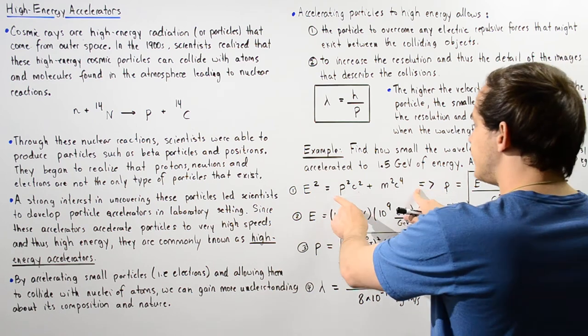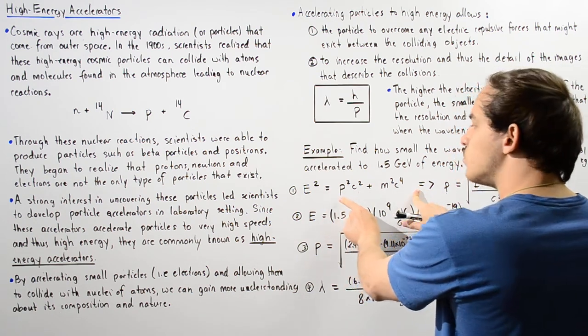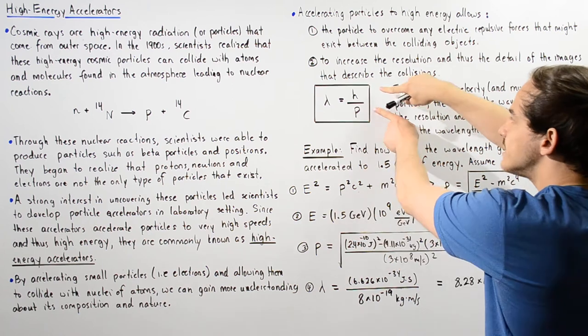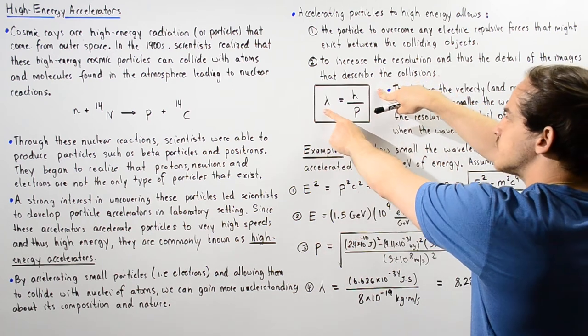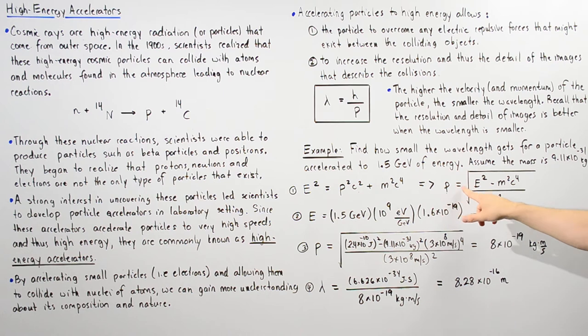Let's rearrange and solve for p, because we want to find what p is to solve for the wavelength. So p is equal to the square root of E squared minus M squared multiplied by c to the fourth, divided by c squared.